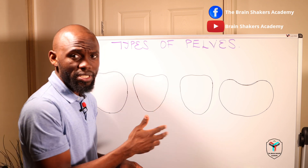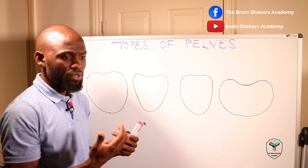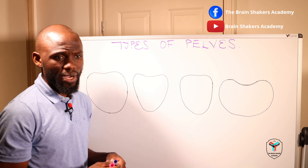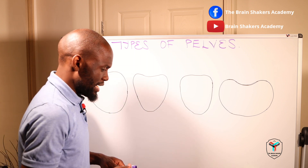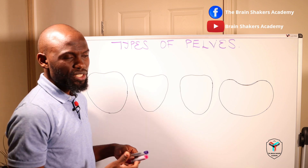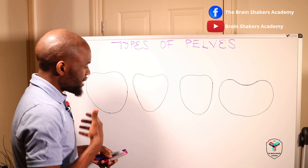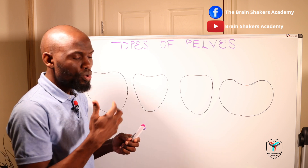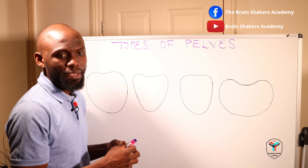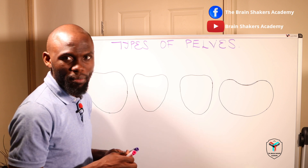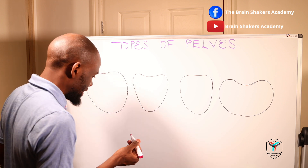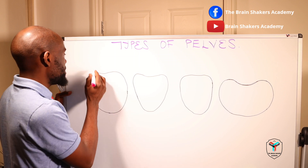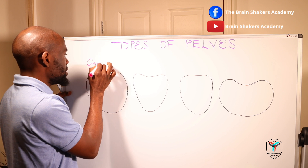We have four types of the female pelvis. The one we looked at in the previous series is referred to as the gynecoid type of pelvis. This type of pelvis is what you would want to find — the one type of pelvis that is going to allow the process of childbirth, delivery, and labor to progress with minimal problems. The first diagram here is a representation of the gynecoid pelvis.